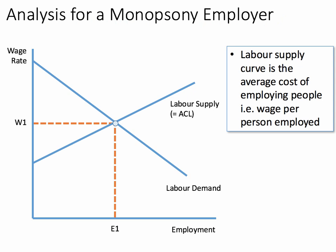The normal equilibrium wage is W1E1. Now the labour supply curve is the average cost of employing labour — it's the average wage per person employed. Notice that it's rising.